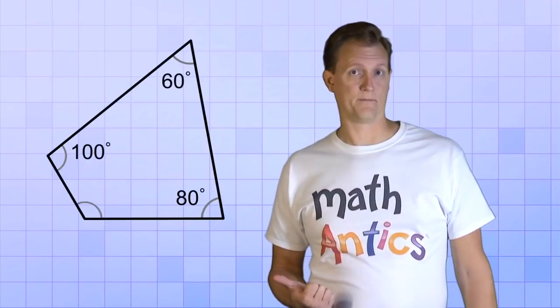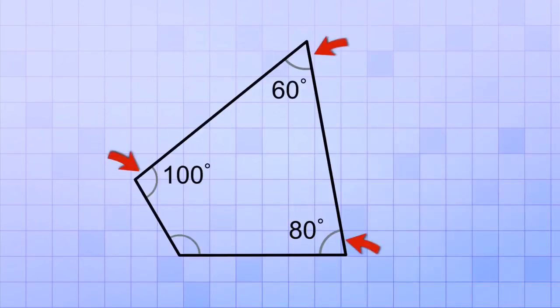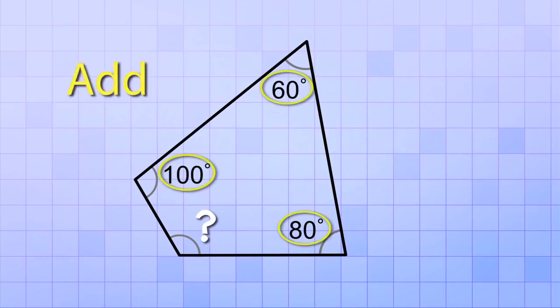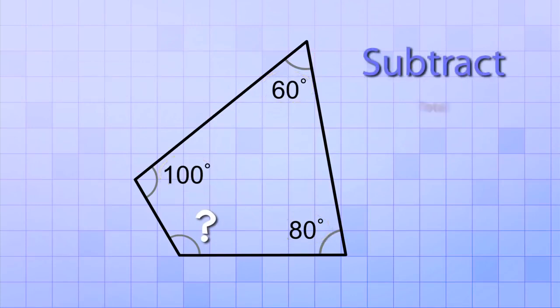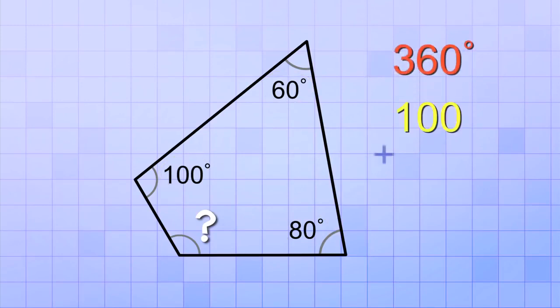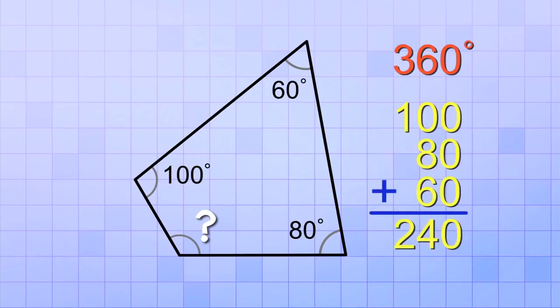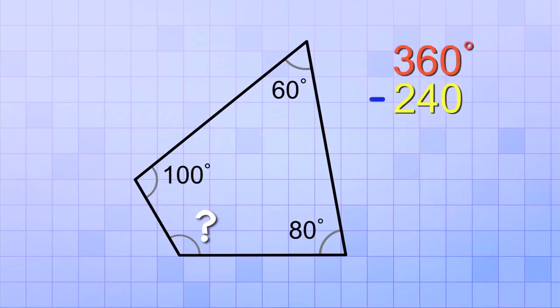Knowing that the angles of a quadrilateral add up to 360 degrees can help you solve problems like this one. For this quadrilateral, we're told what three of the angles are, but the fourth one is unknown. To find the unknown angle, all we have to do is add up the three angles that we do know, and then we subtract that from the total, which we now know is 360 degrees. So, 100 plus 80 plus 60 equals 240. And then, 360 minus 240 equals 120. So the unknown angle is 120 degrees.